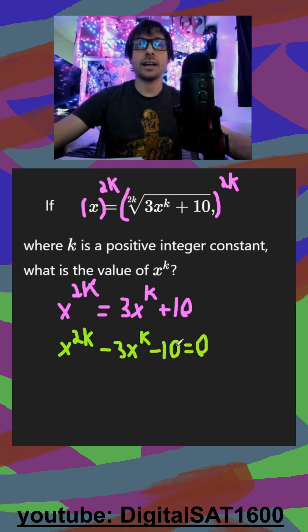And this is actually just like a standard factoring problem. When we set up our parentheses, we have x to the k and x to the k, because when I multiply x to the k times x to the k, it's just x to the 2k.